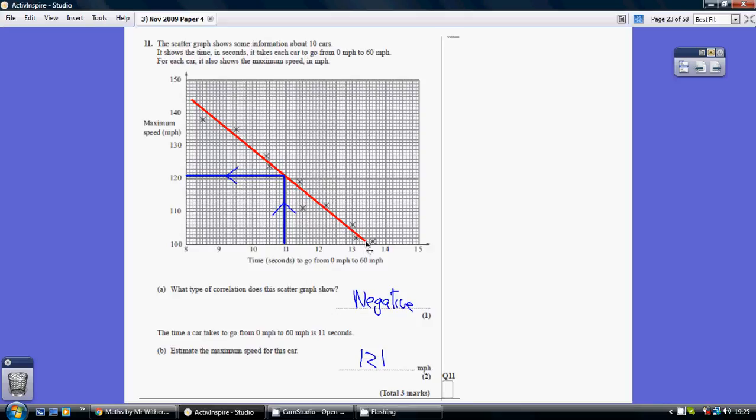However, where you do have to be precise is using your line of fit. So with my line of fit, the time it takes to go from 0 to 60 is 11 seconds. You go up from 11 seconds, and you must hit your line of best fit and read across.